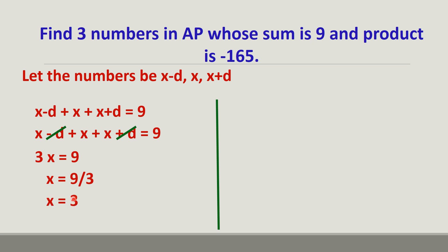If x = 3, then the first number is 3 − d and the last number is 3 + d. We still need to find d. The other information given is that their product is −165. So the product of (x − d), x, and (x + d) is −165.